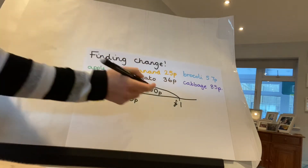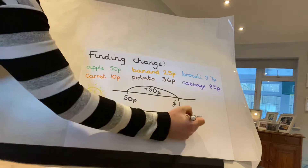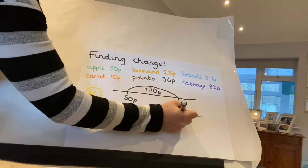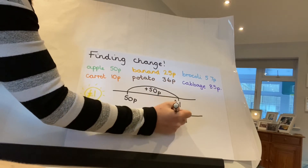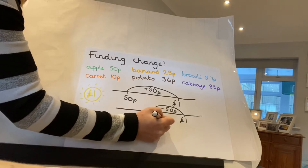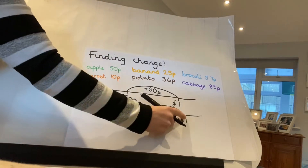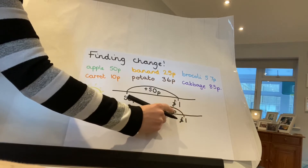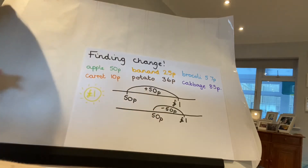I could turn it the other way: if I had one pound and took away the cost of the apple, which would be 50p, I would end up with 50p change. You could always break that down into 10s if it helped: 100, 90, 80, 70, 60, 50.